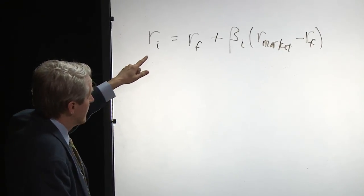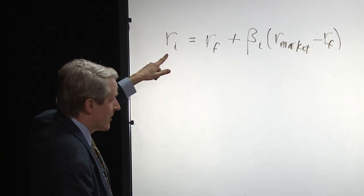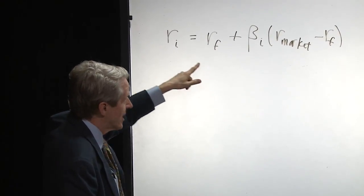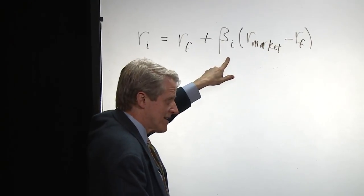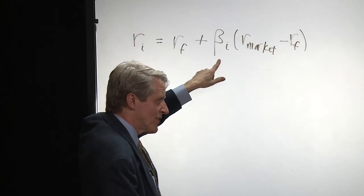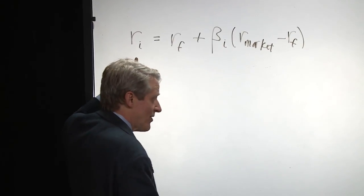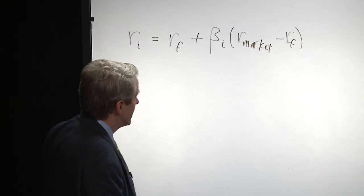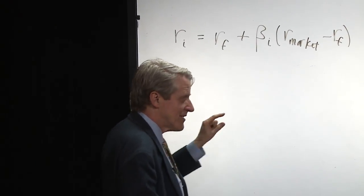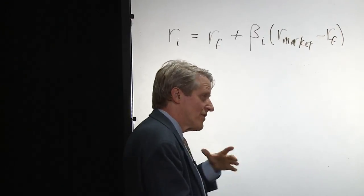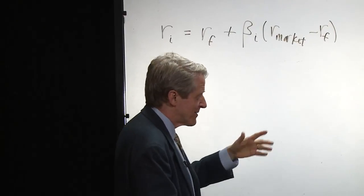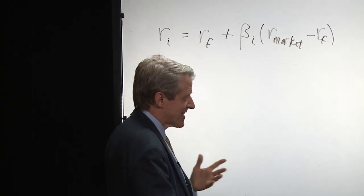Some assets have an expected return which is less than the risk-less rate. Those are negative beta assets, like gold. And so you say, well, why would anyone be so stupid as to invest in gold when it has a lower return than the risk-less rate? And the answer is, it's not stupid at all. The negative beta is helping reduce the overall variance of their portfolio. Because gold goes up when the stock market goes down, it offsets other risks.